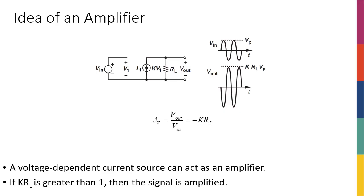In the simplest way of defining a transistor, we can define it as a voltage controlled current source. As a physical analogy, imagine you have a water pipe with a valve controlling the flow of water. Water comes in from one end and goes out the other, and by adjusting the valve you can adjust the amount of water flowing through the pipe. By controlling the physical movement of the valve, you're controlling the flow of water between the two ends of the pipe.